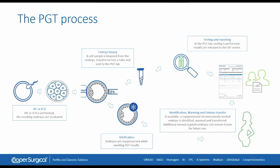In order to go through a PGT process, the patient will have to undergo IVF and/or ICSI. After hyperstimulation, oocytes are recruited, they are fertilized, and embryos are cultured. We will focus on biopsying of the day five blastocyst stage embryo. When these cells have been biopsied, they will be tubed and sent to the genomics laboratory for testing.